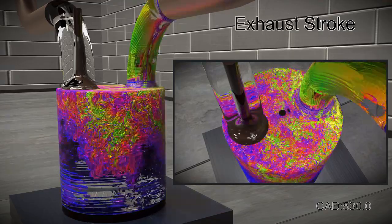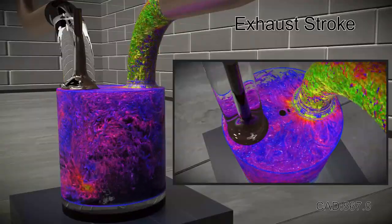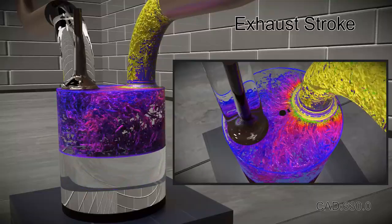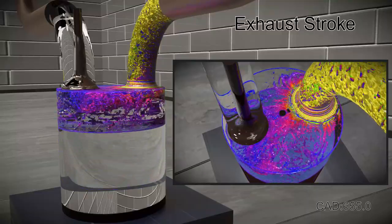The final portion of the cycle is the exhaust stroke, where the exhaust valve opens, letting pressurized air enter into the chamber. As the piston moves up, air is expelled from the chamber through the exhaust port and onto the exhaust plenum.